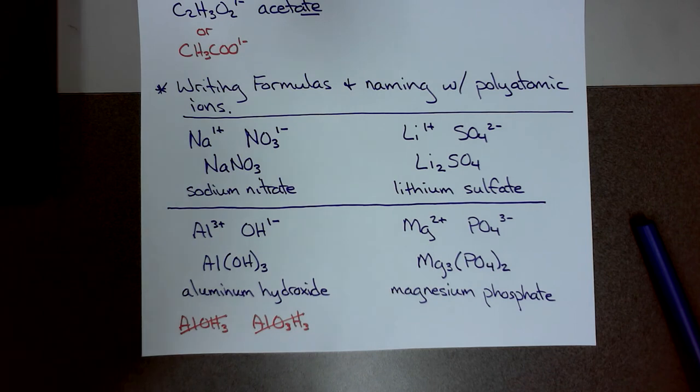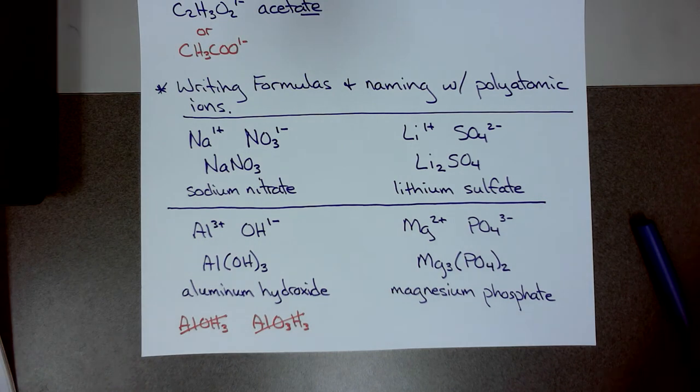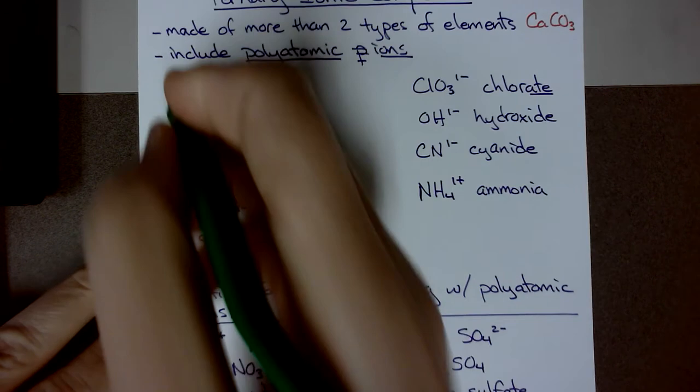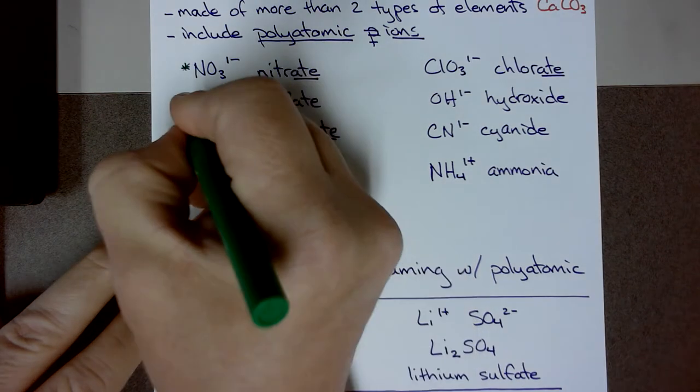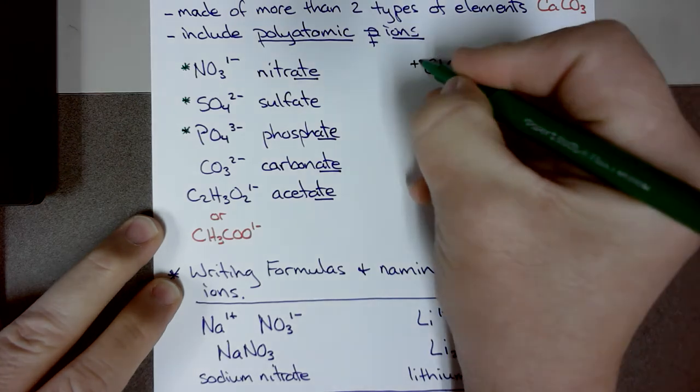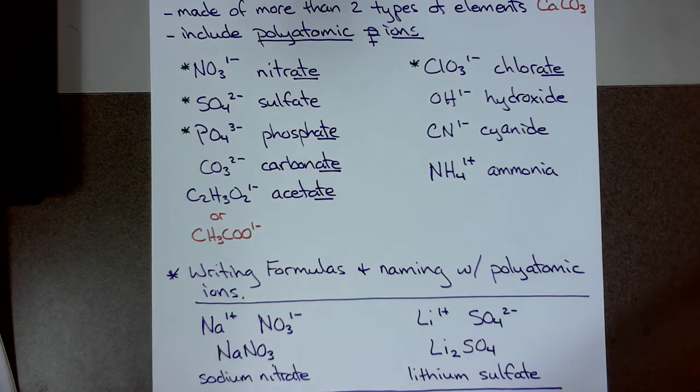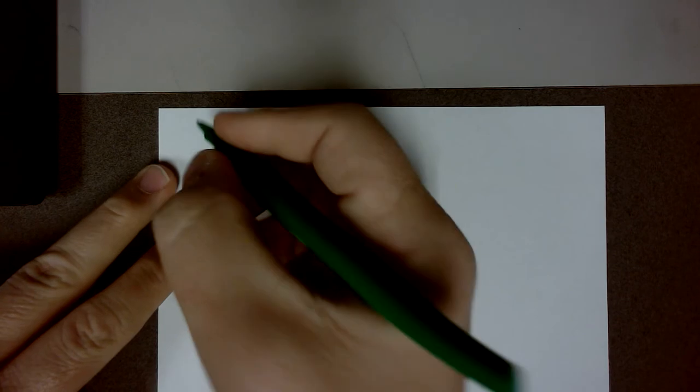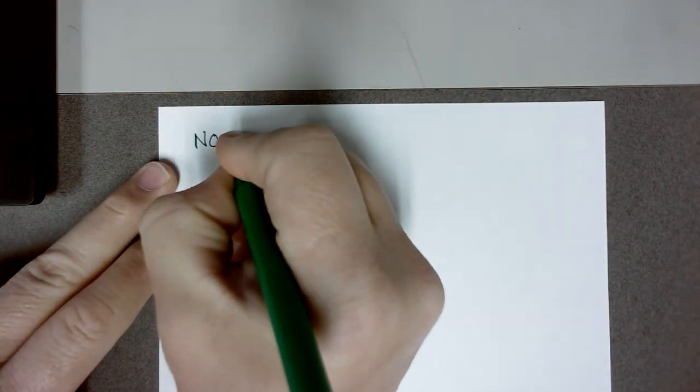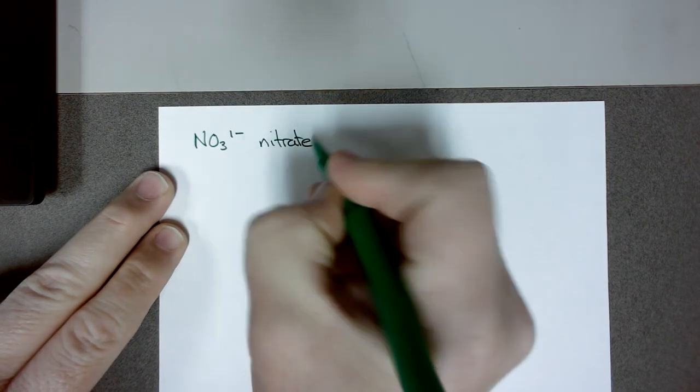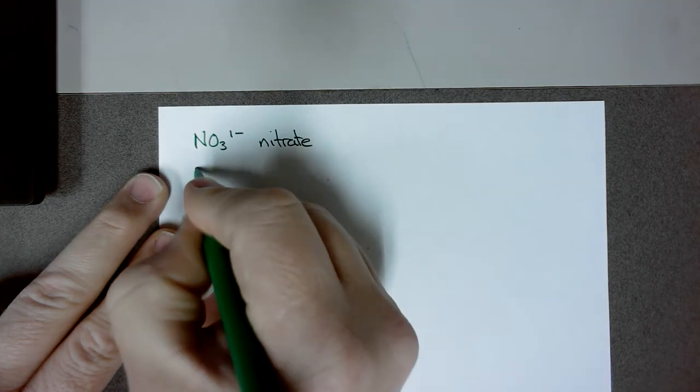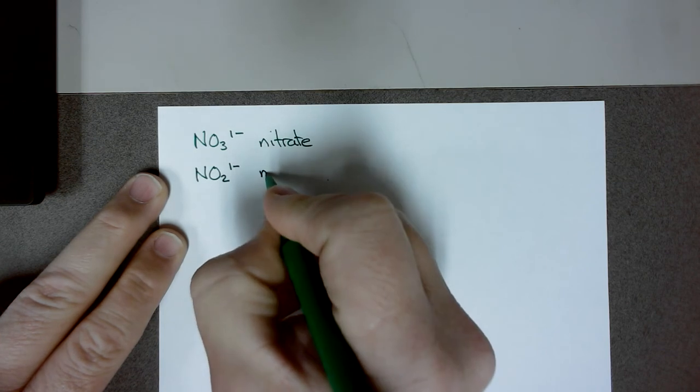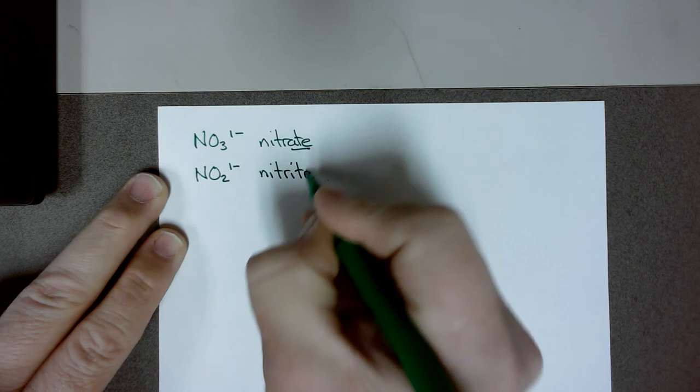So that's how we write the formulas and name the ionic compounds. The next thing I want to do is show you some of the patterns that occur, and specifically with these ions up here. We're just going to look at the nitrates, sulfate, phosphate, and chlorate. So let's start with nitrate. Now nitrate is NO3 minus. But if nitrate can lose an oxygen and become NO2, it's still the same charge. But now we go from a nitrate to a nitrite. So -ate to -ite when you lose an oxygen, same charge.